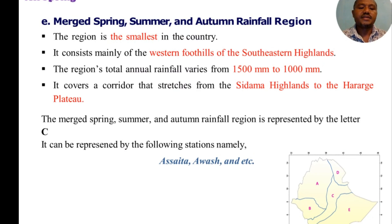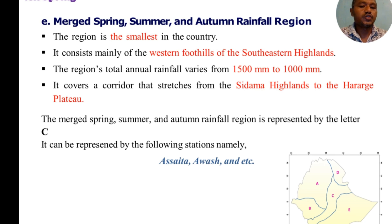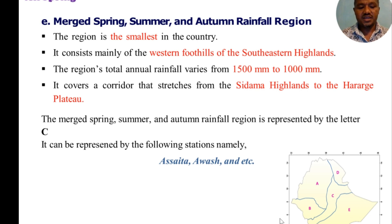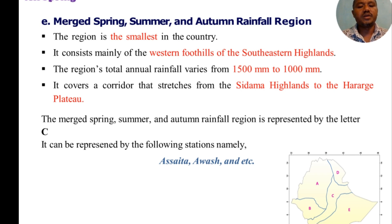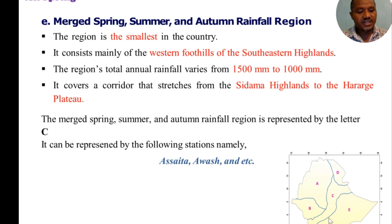The last rainfall region is the spring, summer, and autumn rainfall region, and it is the smallest in the country. The area in the region is the smallest area, consisting of the western foothills of the south-eastern highlands.